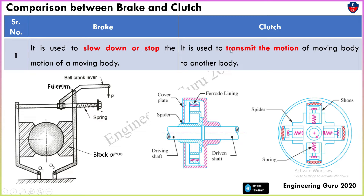Whereas a clutch is used to transmit the motion of a moving body to another body. A clutch is a mechanical device that is used to transmit the power and motion from the driving shaft to the driven shaft, so the driven shaft can be started or stopped as per the need.